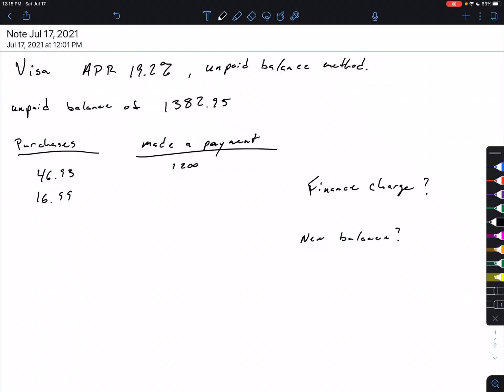All right, suppose you've got a Visa card, and on that Visa card, your APR is 19.2%. We're going to calculate all this on an unpaid balance method.